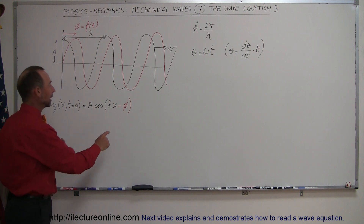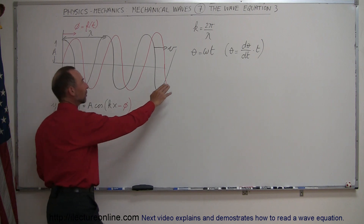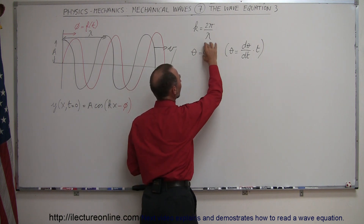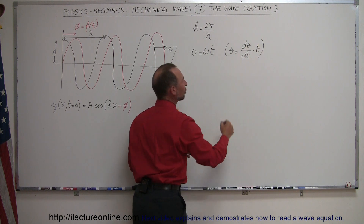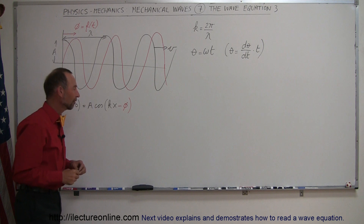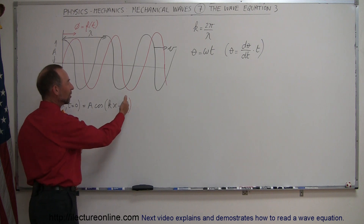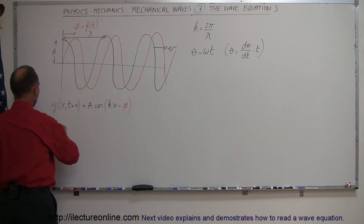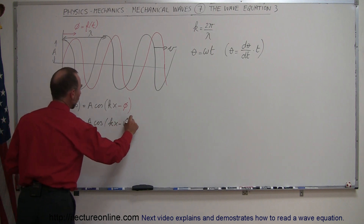Now notice that we're going to replace the phase shift by something that depends on t. An angle theta is equal to omega times time, since theta equals (dθ/dt) times time. The shift is equal to the angle difference, so we can replace the phase shift with omega times t. This means y as a function of both x and t is equal to A times the cosine of (kx − ωt).